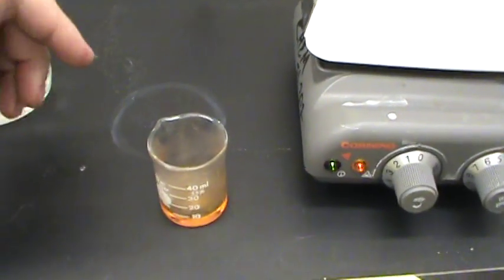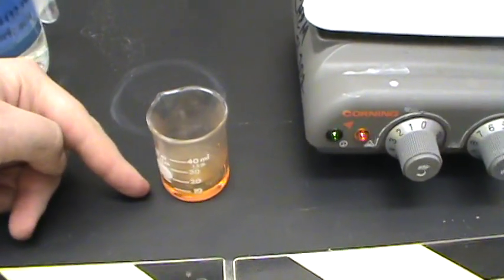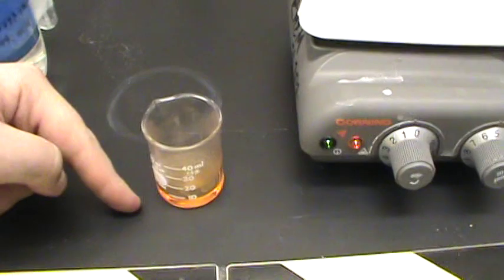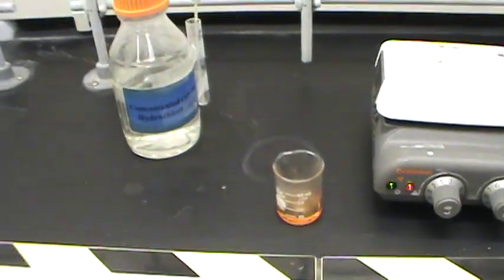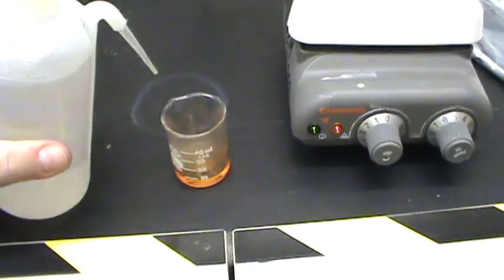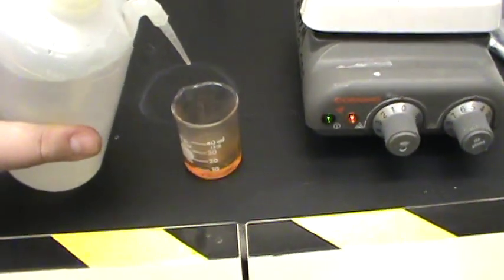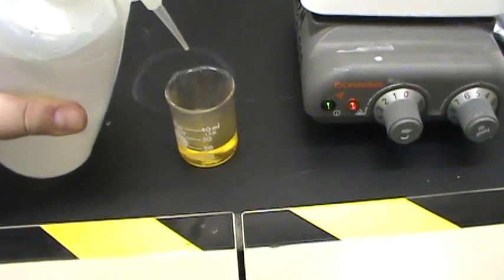So before you leave the hood, we can do a couple things to help ourselves out. The first problem: this is really hot, so we'd like to cool it down. The second problem: it's really concentrated, so we'd like to dilute it. So let's reach over here, and if you just take a wash bottle with a little bit of water in, you can see...